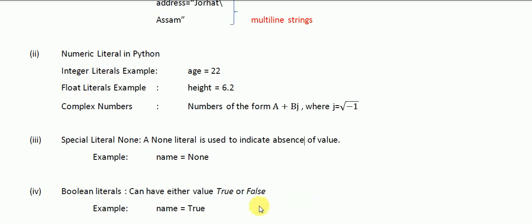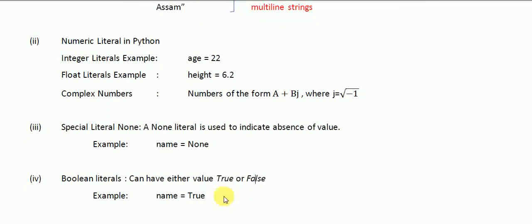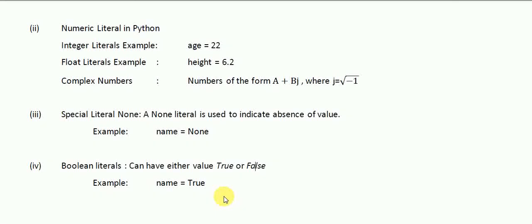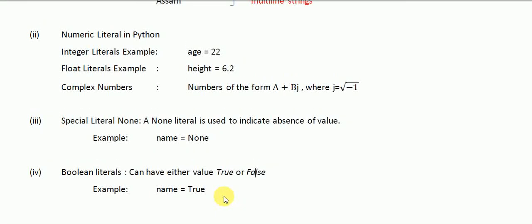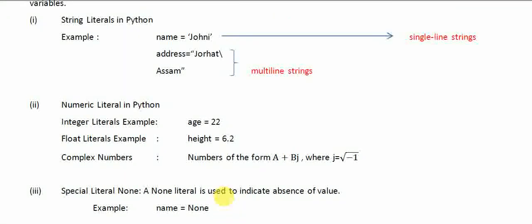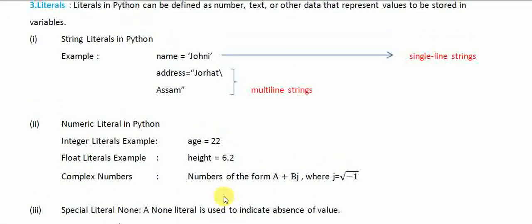The last type is a boolean literal. Boolean literals are those whose value is either True or False. In Python, the T in True should be capital and the F in False should also be capital — these things you have to remember.